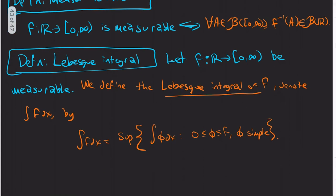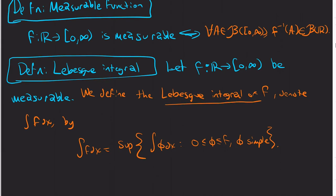So what we're going to do is we've already defined the integral for simple functions. We just take the supremum over all simple functions that are less than or equal to the function f. And that's all the definition is. We've already built it on simple functions, take a supremum.